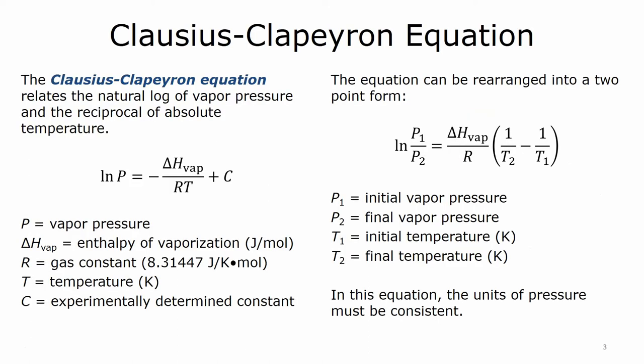Now the Clausius-Clapeyron equation relates the vapor pressure of a liquid and its temperature. As you increase the temperature then you are putting more of the liquid molecules into the vapor phase, and as you lower it more are going to condense. Now this equation comes in two forms.